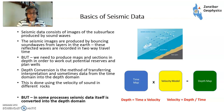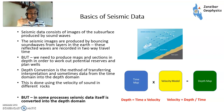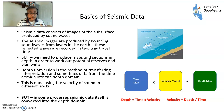The image is normally in the time domain — that is, two-way time: the seconds taken for the wave to go down and then come back up again. You then depth convert those resultant interpretations to produce depth maps, which you use for planning wells, calculating reserves, values, and prospects.